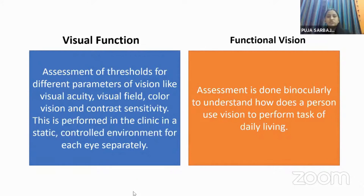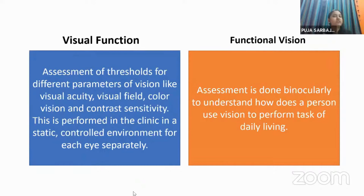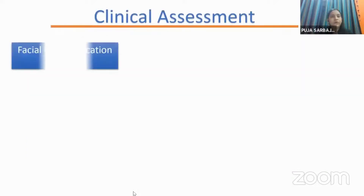Visual function is the assessment of threshold parameters — acuity, visual fields, color vision, and contrast — assessed each eye individually. Functional vision is assessed binocularly to understand how a person performs daily activities. It includes observing the child entering the room, whether they bump into objects, how they look at you, social smile, and other behaviors.